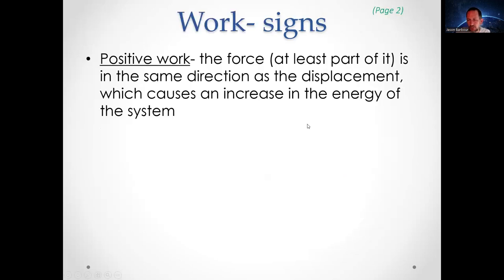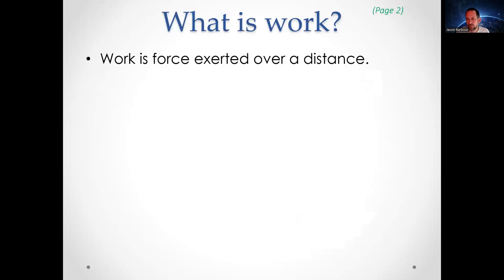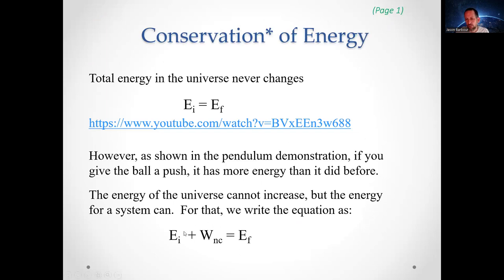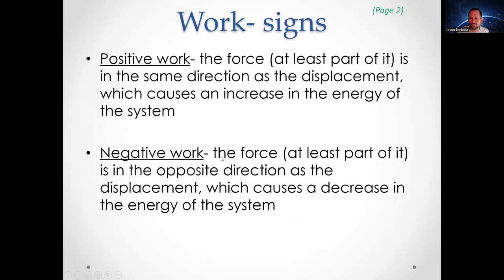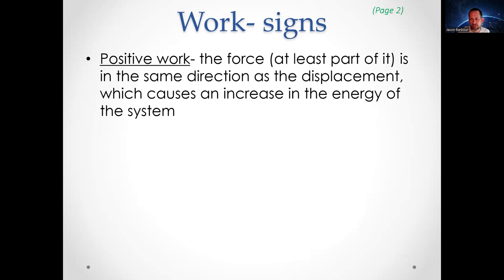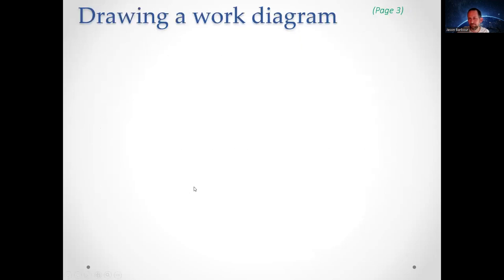Work can be positive if the force, or any component of it, is in the same direction as the displacement — this causes the energy in the system to increase. In our accounting equation, positive work added to the initial energy gives a greater final energy. Negative work occurs when the force or a component of it is in the opposite direction of the displacement, as with the cable lowering the briefcase — this decreases the energy in the system.